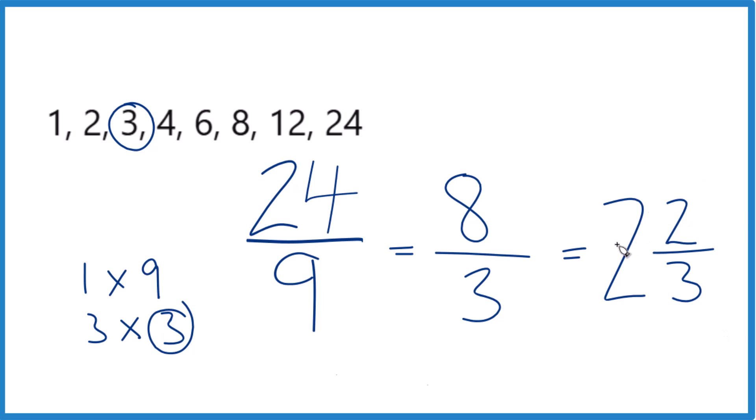We can check that. 2 times 3 is 6, 6 plus 2, that's the 8, and we keep the 3 the same. So when we simplify the fraction 24 ninths, we could say it's 8 thirds, or the mixed number 2 and 2 thirds.